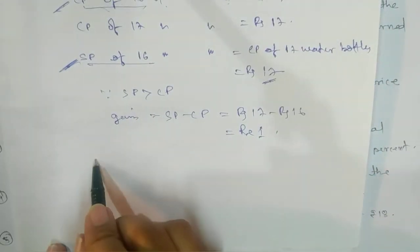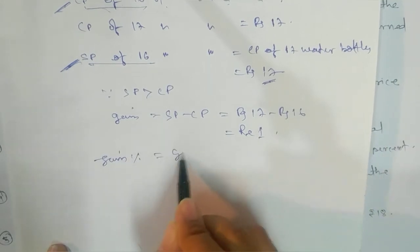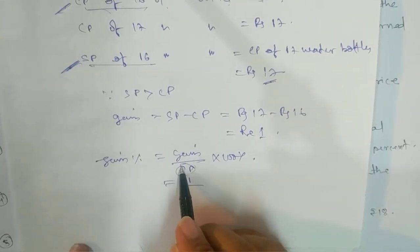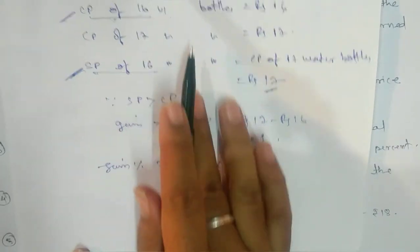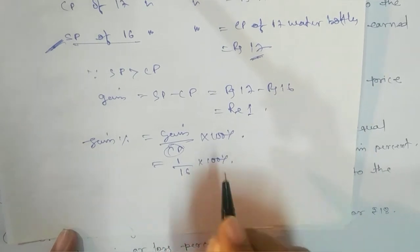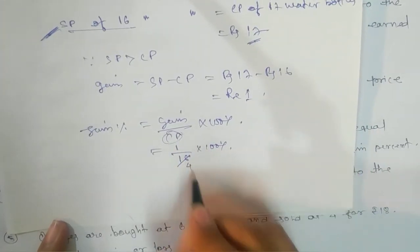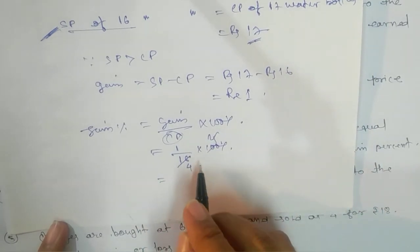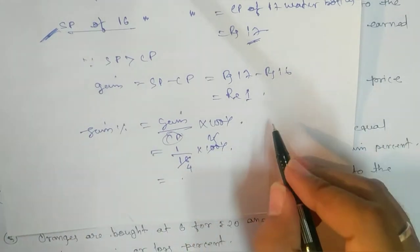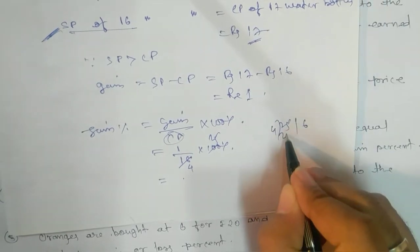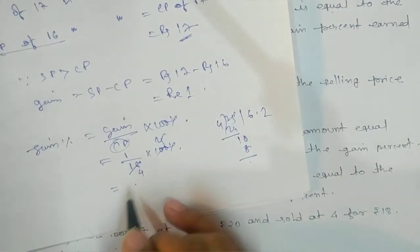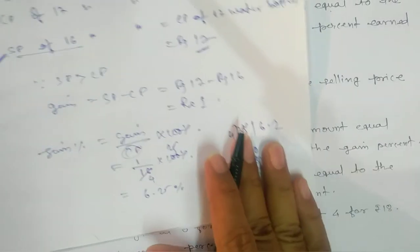We need to find gain percent. The formula is: Gain% = (Gain / CP) × 100%. Substituting: Gain% = (1 / 16) × 100% = 6.25%. This is our first answer: 6.25% gain.